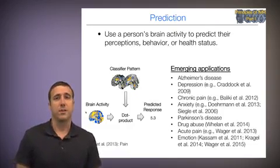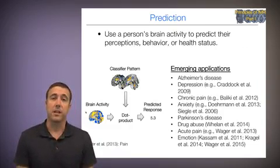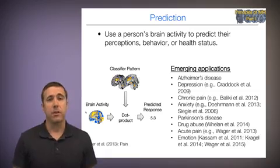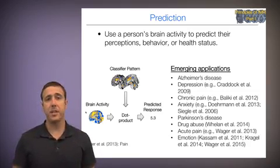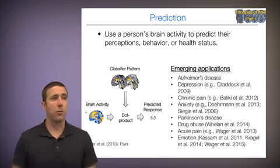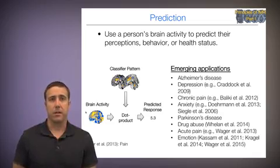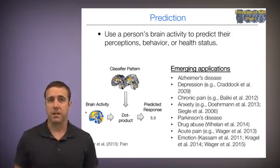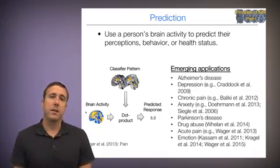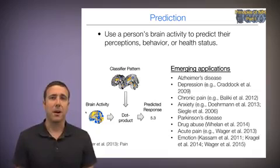Finally, the third type is for prediction. We can use a person's brain activity to predict their perceptions, behavior, health status, and a number of different kinds of outcomes. So on the left here, you see an example from our work where we've developed a classifier pattern to predict how much pain somebody is feeling in response to a given stimulus. And we can apply that pattern to new brain images coming in to make a prediction about how much pain they're feeling. And we can validate that prediction across individuals, across studies, and so forth.